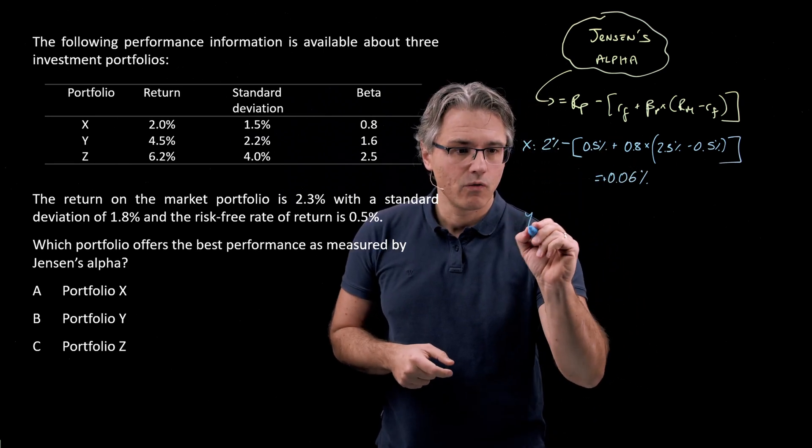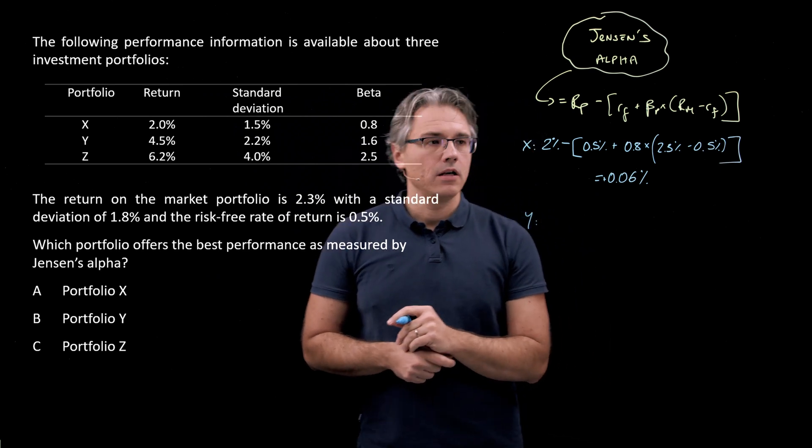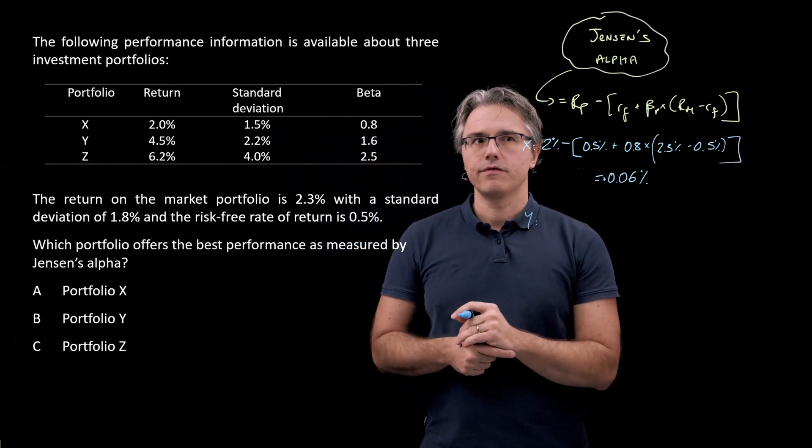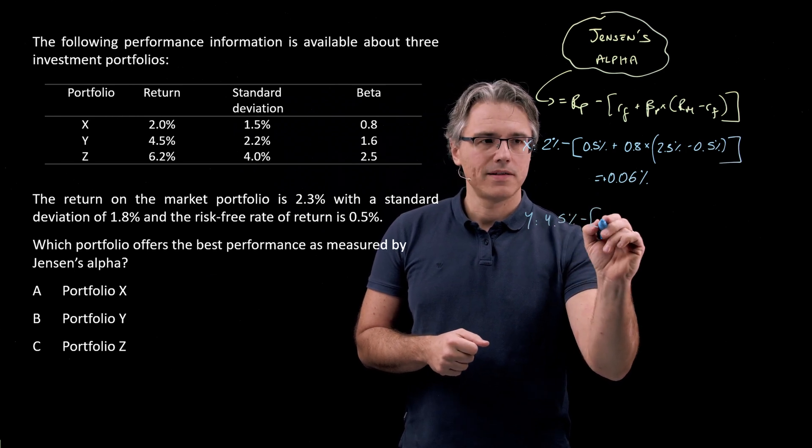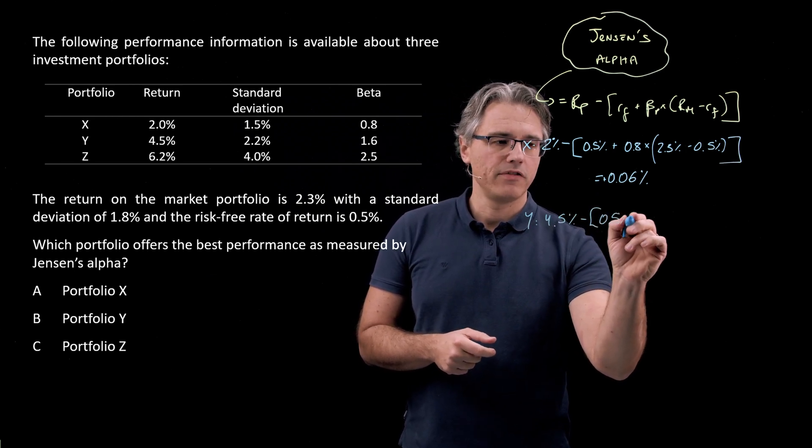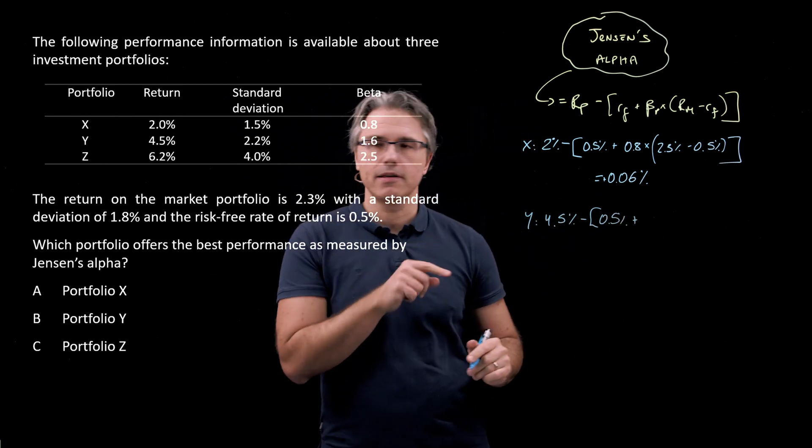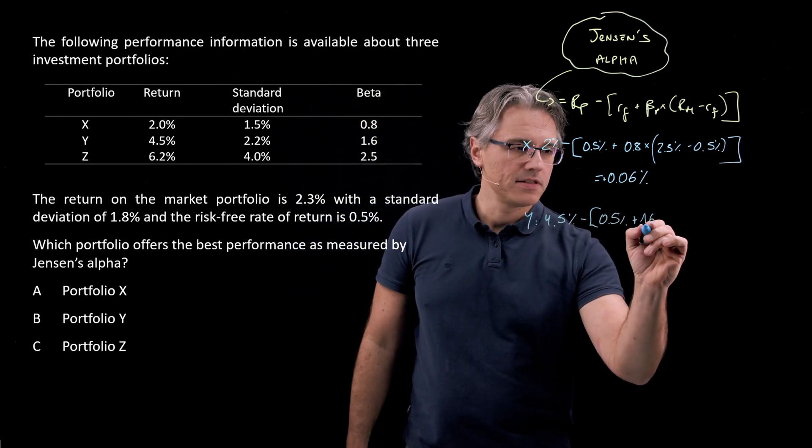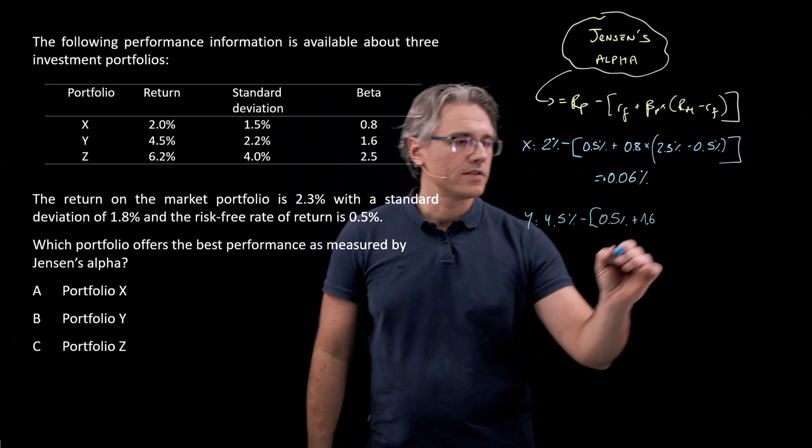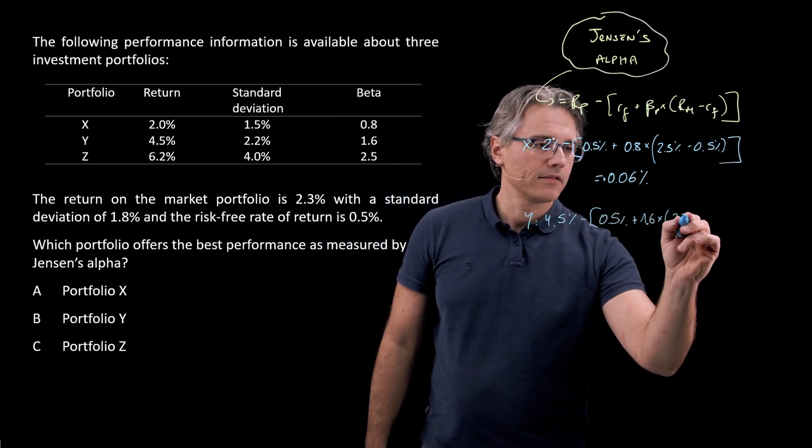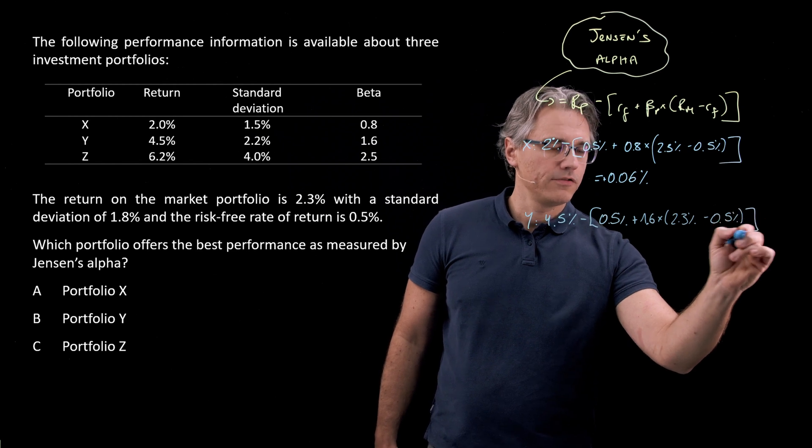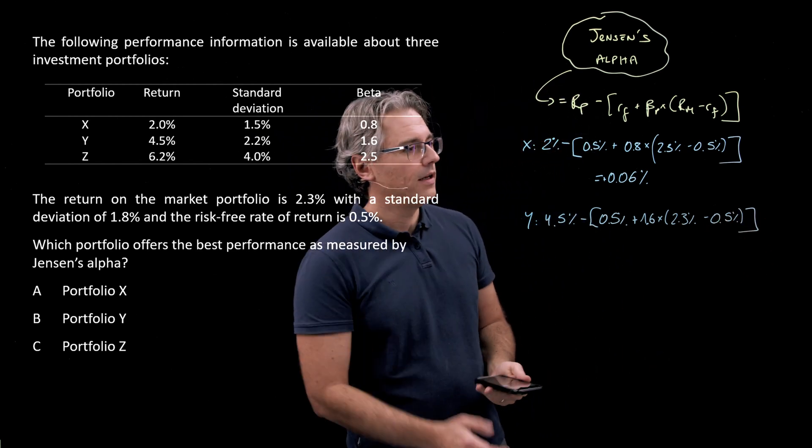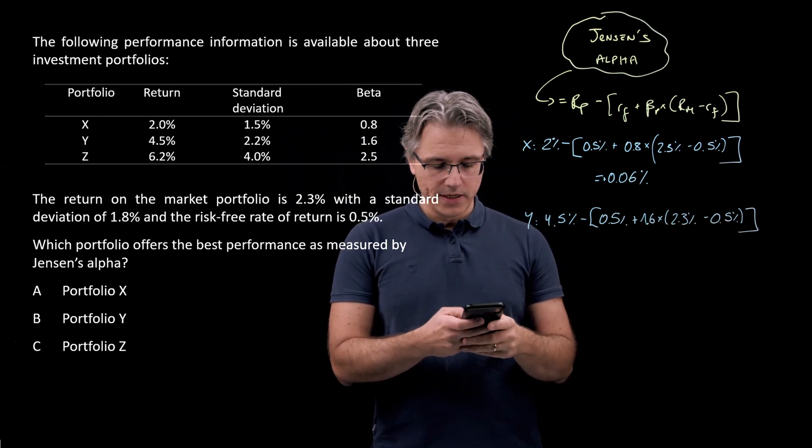How about Y? Well, over here we're going to have the return of 4.5% minus the same thing as before, 0.5 plus, and the only thing that changes here is the beta, which is going to be specific to each portfolio, 1.6. Other than that, we've got 2.3 minus 0.5, just like before. So I know the term here in the bracket is 1.8.